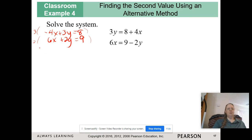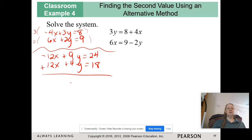So that will give me negative 12x plus 9y, don't forget to multiply the constant. And in the bottom, 12x plus 4y, and again, don't forget to multiply the constant. Okay, I'm going to add those together.